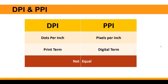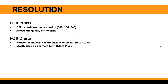As you can imagine, how can they be equal? The print term refers to something on a physical object, while the digital term is related to digital screens — your laptop, computer monitor, or mobile device screen. Now that we're clear on the naming, the next thing is resolution. For print, DPI is considered the resolution of any printed object or print file.